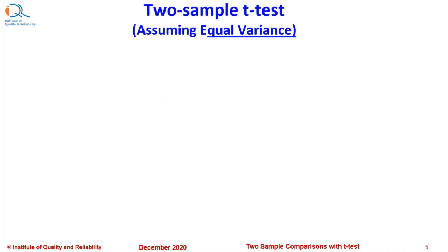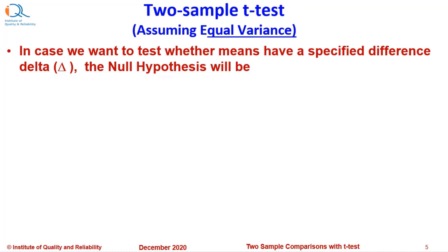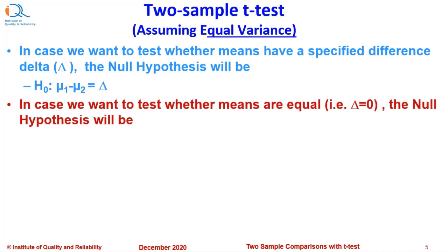First, we will see two sample t-tests assuming equal variance. In case we want to test whether means have a specified difference delta, the null hypothesis will be given by H0: mu1 minus mu2 equal to delta. In case we want to test whether means are equal, that is delta is equal to 0, the null hypothesis will be given by H0: mu1 minus mu2 equal to 0 or simply H0: mu1 is equal to mu2.